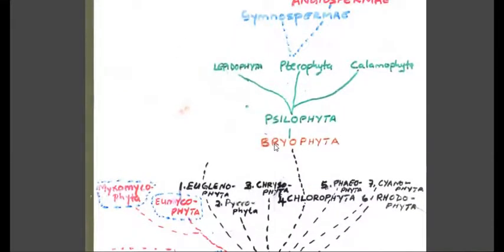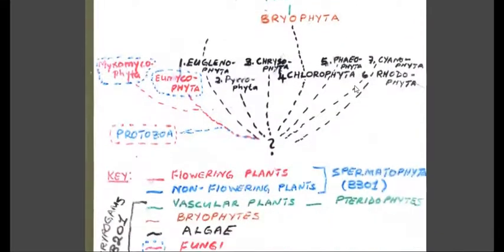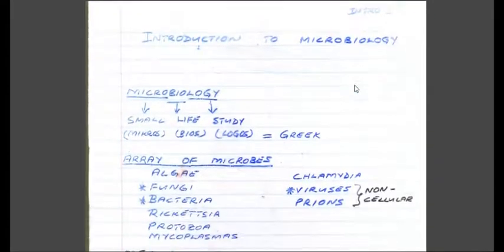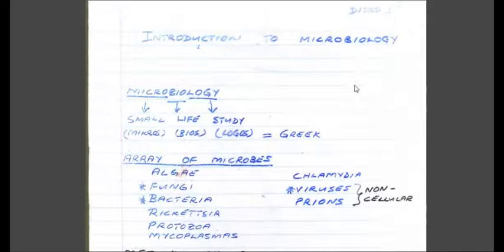We'll go from Bryophyta and stop at the end of the semester. In the second semester we'll start with Xylophyta, which are the Pteridophytes, and then cover Gymnosperms and Angiosperms — the true seed-producing plants, or Spermatophyta.